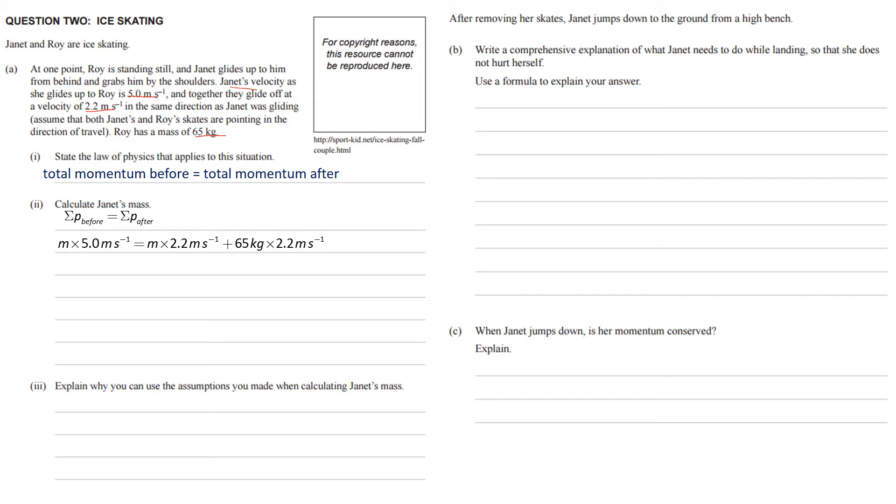So we can see that we have this unknown value in here called m. It's in two different places, and we're going to have to rearrange and then solve. Rearrange so we have m as the subject, and then solve to find out what the value of m is. So the first thing that I do here is I've just simplified this. So we've got 5m equals 2.2m plus 143, so I've multiplied those two together. Take the 2.2 and subtract it from both sides.